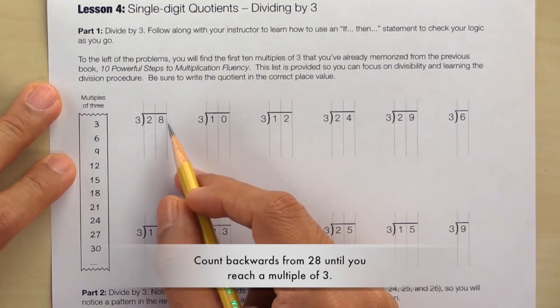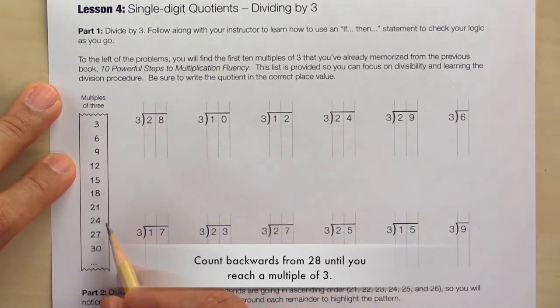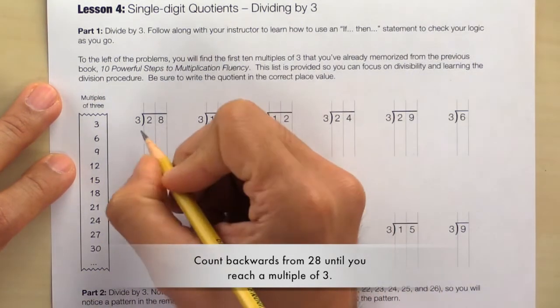So look at 28 and count backwards. Counting backwards from 28 brings us to 27. Is 27 on the list? The answer is yes, it's right here. So write it down right away.